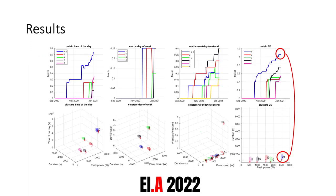In this slide, we report the final results for a specific house in our dataset. For each column we have a different feature combination. In the first row we have the evolution of the quality metric during the monitoring period, while in the second row we have the final clusters found at the end of the monitoring period. According to these results, we only found a significant pattern in the two-dimensional clustering plan — cluster number 1 with 21 data points — because the blue line exceeded the 0.9 threshold defined for our work.